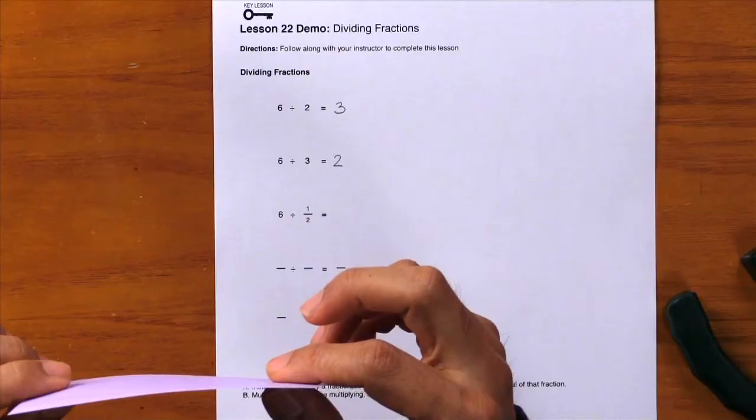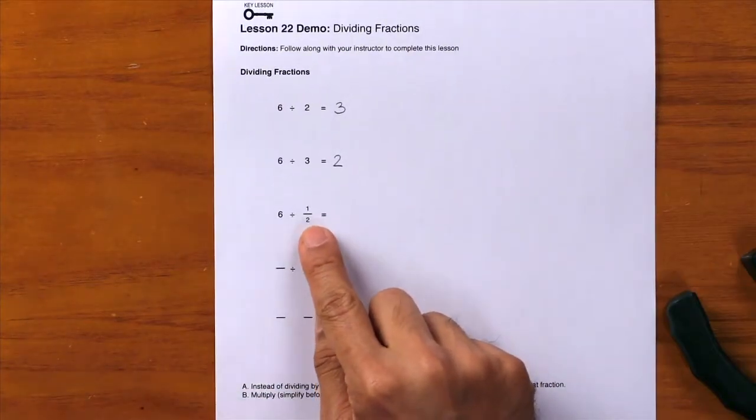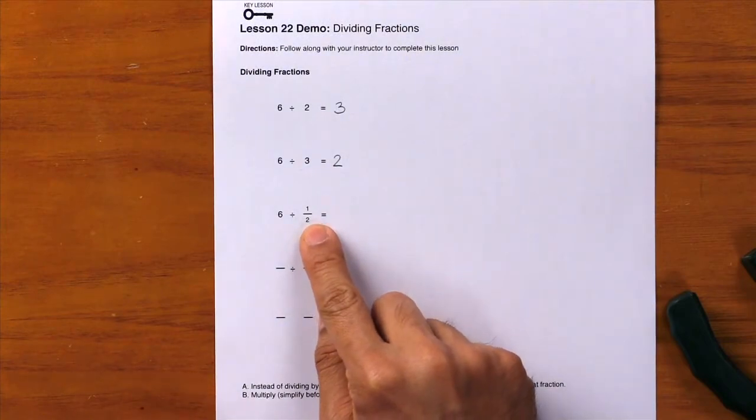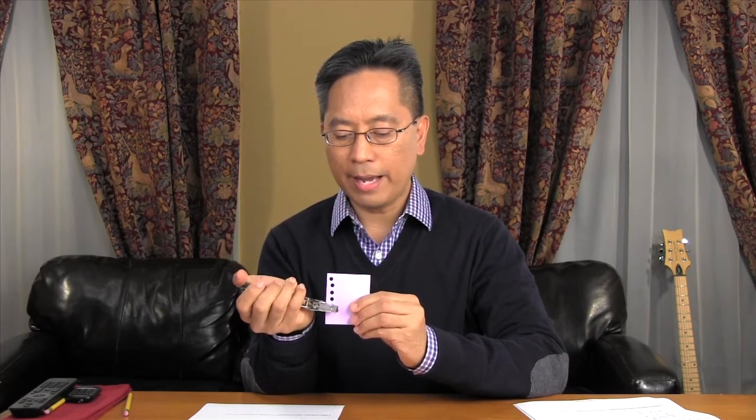Here is an index card, but I actually don't need the whole thing. According to the problem, I only need half of an index card. So I'll take this and fold it in half, and we're going to punch the same six holes to show six divided by one half. Here we go. Here's one, two, three, four, five, six.